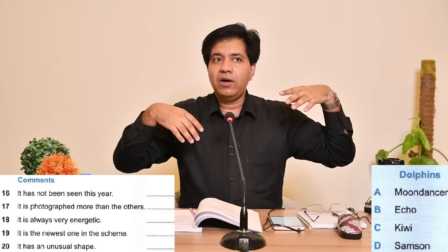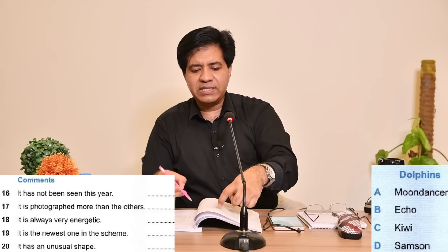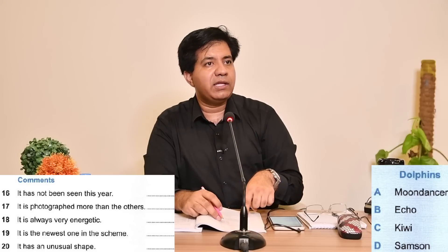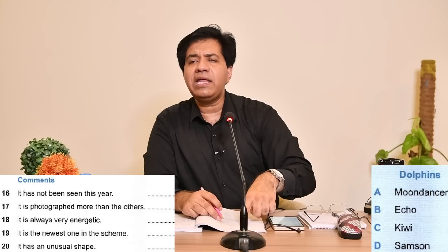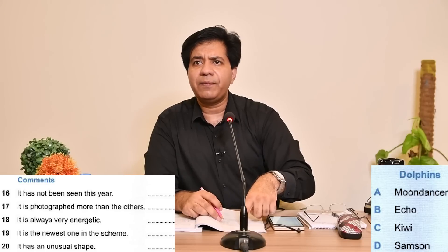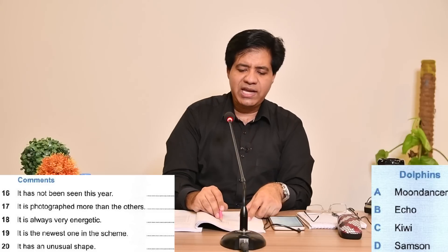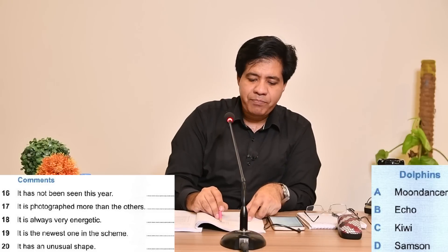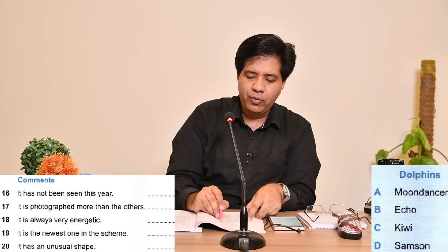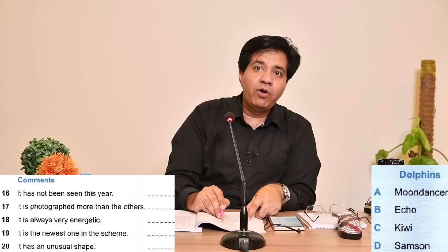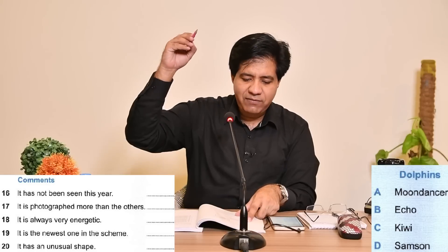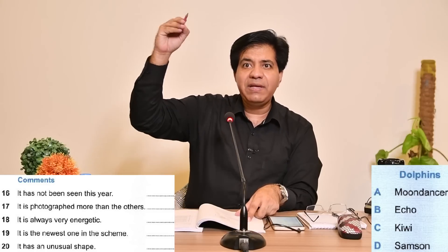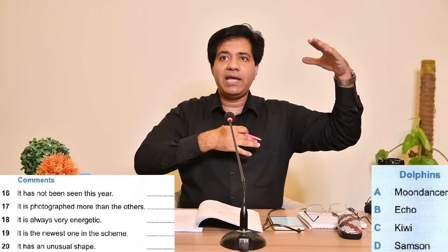Understand that the dolphin names are usually written in the questions, and the comments go above in the options. For example, in any Cambridge IELTS you can see: question number 16 will be the name of dolphin, 17 will be dolphin Echo, 18 will be dolphin Kiwi, 19 will be dolphin Samson, and the comments will correspond to A, B, C, D. So this interchange can happen — you should be prepared for that.